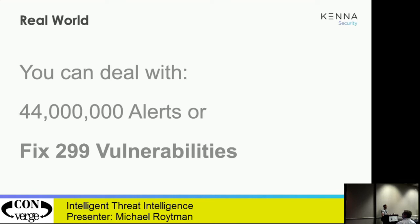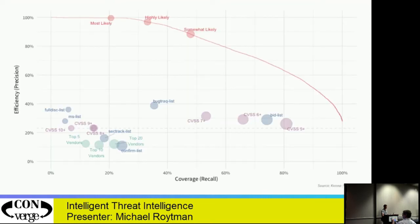That's the deep dive into the data. I'm going to spend 10 more minutes on one chart tying it all together, then leave room for questions. A couple of concepts I talked about: one was efficiency — are you wasting time, are you remediating things that don't pose a risk? The other is coverage — are you addressing all the risks in your environment?